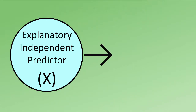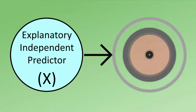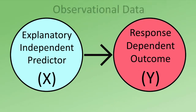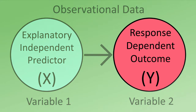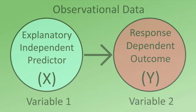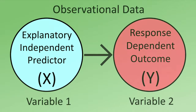It's important to understand that when studying two variables, each variable has a role to play. A variable may either be a response variable, also known as the dependent variable or outcome variable, or it could be the explanatory variable, also known as the independent variable or predictor variable.